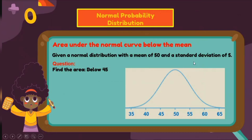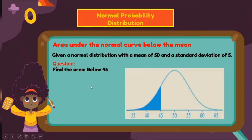The mean is equal to 50 and the standard deviation is equal to 5. Add 5 to the right side to get 55, 60, and 65. For the left side, subtract the standard deviation: 50 minus 5 is 45, minus 5 is 40, minus 5 is 35. Next, illustrate: find the area below 45. When we say below 45, that means to the left of 45, so shade that region.